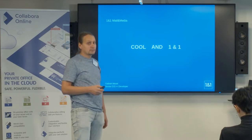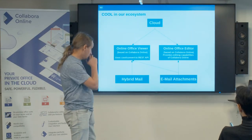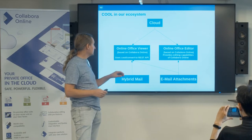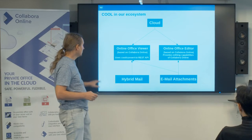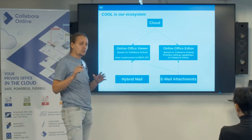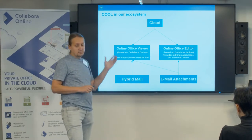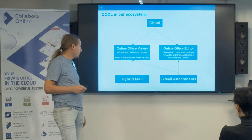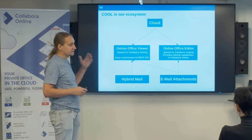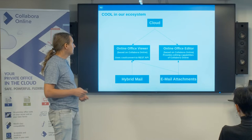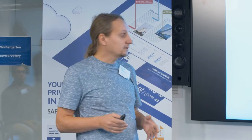Today I will talk about this integration. We are offering two services: one is a viewer and one is an editor, both based on Collabora Online. The viewer uses the convert-to REST API to convert documents to PDF, which is then displayed, and the editor provides the full set of editing capabilities of Collabora Online. These services are used by the cloud so users can view and edit documents.